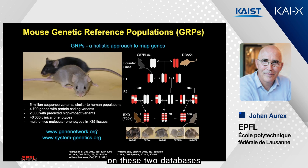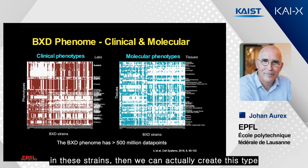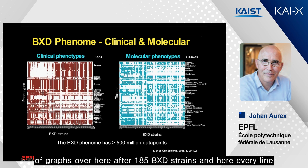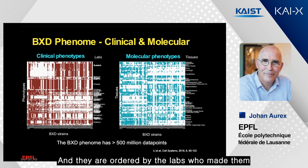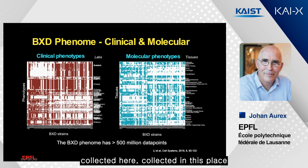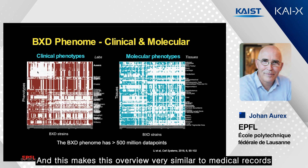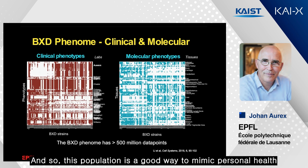All of them you can look up on these two databases. If we organize the clinical and molecular phenotypes in these strains, we can create these types of graphs. We have the 185 BXD strains, and here every line — 6,000 lines in this graph — represents phenotypes, ordered by the labs who made them. You see a lot of white here, meaning no phenotypes were collected in that place. This overview is very similar to electronic health records, where not every patient gets every disease, making this population a good way to mimic personal health.